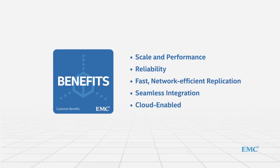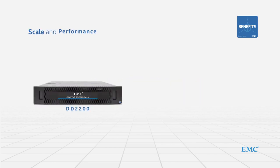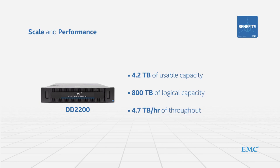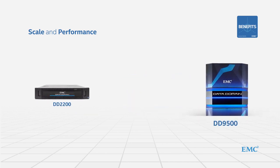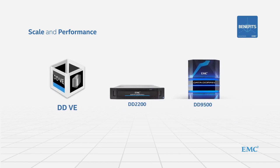Data Domain directly benefits customers in a number of important ways. For scale and performance, Data Domain delivers industry-leading speed and scalability. The DD2200 starts at 4.2 terabytes of usable capacity, up to 800 terabytes of logical capacity, and delivers throughput up to 4.7 terabytes per hour. The DD9500 addresses large capacity environments with up to 1.7 petabytes of usable capacity, 86.4 petabytes of logical capacity, and delivers throughput of up to 58.7 terabytes per hour. DDVE provides software-only protection storage, allowing customers to start as low as 0.5 terabytes of usable capacity per instance.